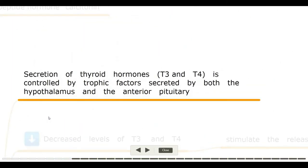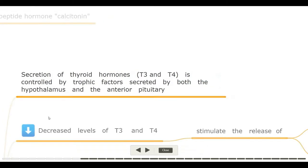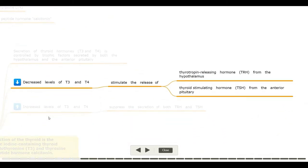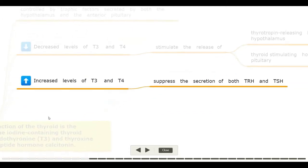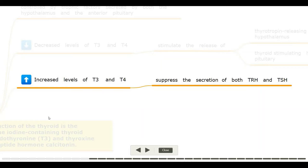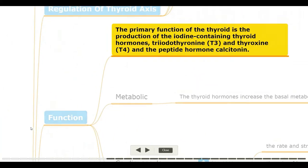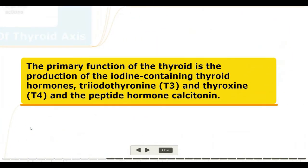Regulation of the thyroid axis: secretion of thyroid hormones T3 and T4 is controlled by trophic factors secreted by both the hypothalamus and the anterior pituitary. Decreased levels of T3 and T4 stimulate release of thyrotropin-releasing hormone (TRH) from the hypothalamus and thyroid-stimulating hormone (TSH) from the anterior pituitary. Increased levels of T3 and T4 suppress secretion of both TRH and TSH.